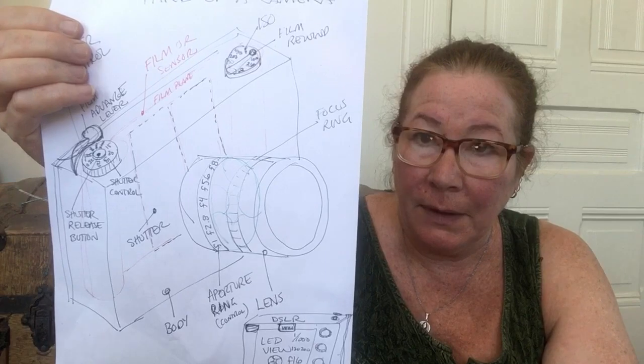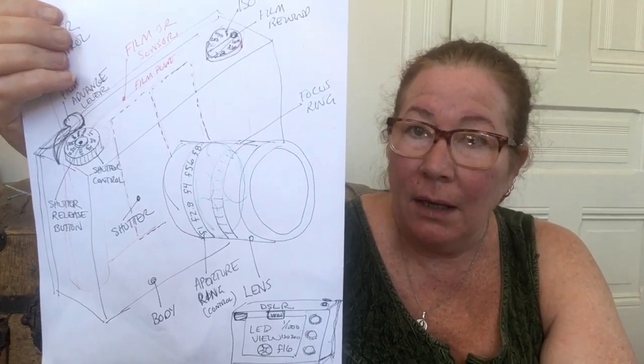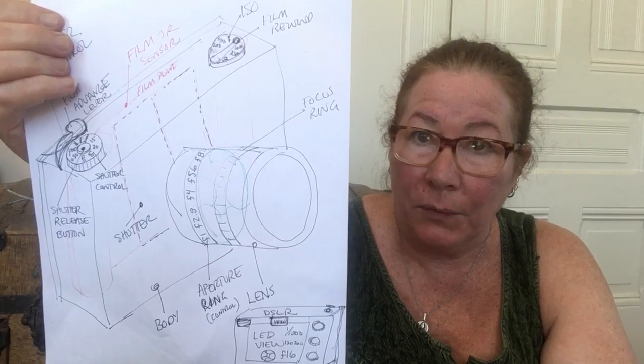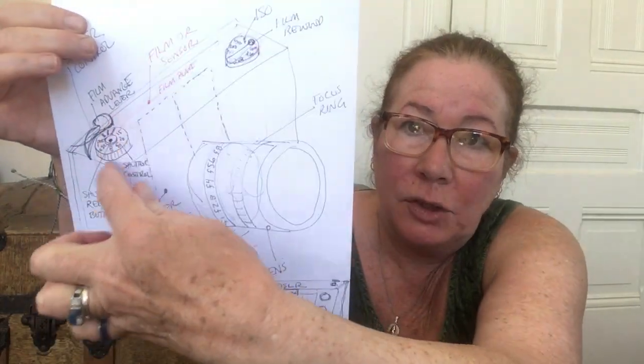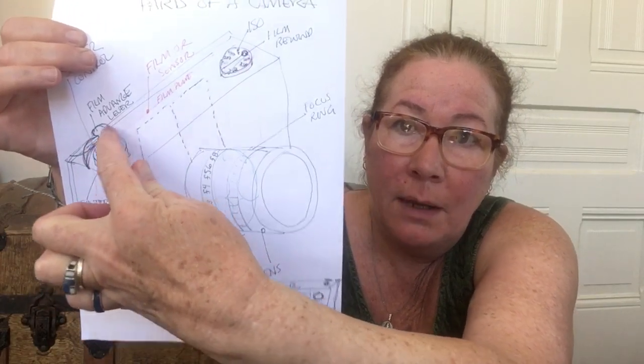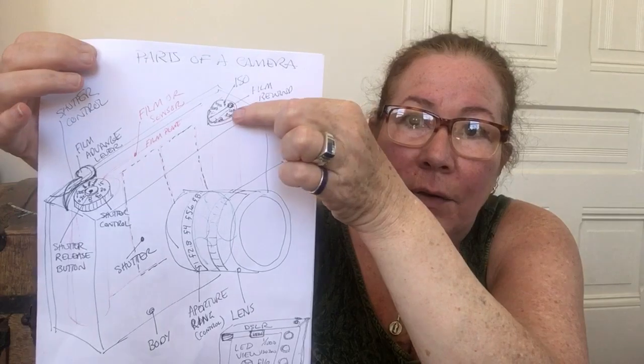So to recap: you've got the body, the lens, the aperture, the shutter, the aperture ring to control the size of the aperture, the focus ring to focus, the shutter release button, the shutter speed control, the film advance lever, and the ISO control. I think I pretty much got it all.